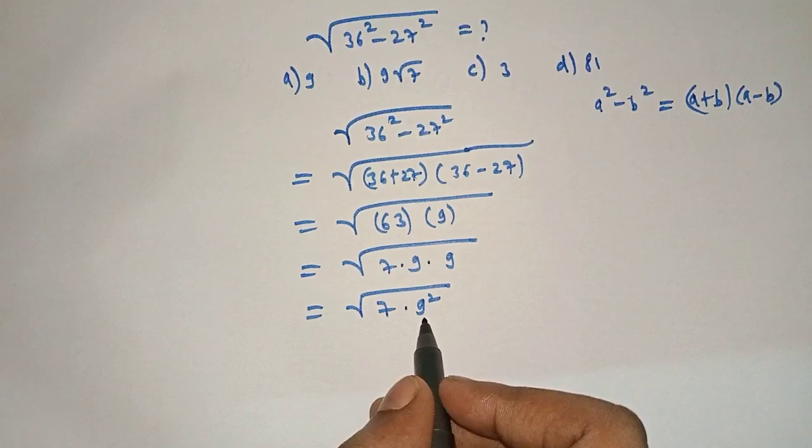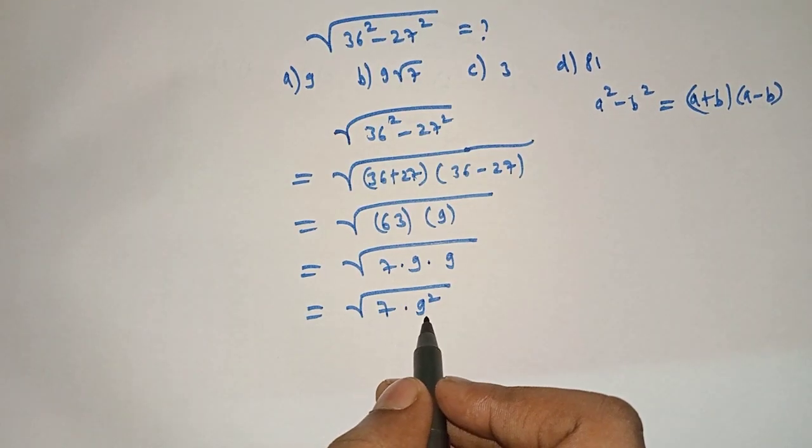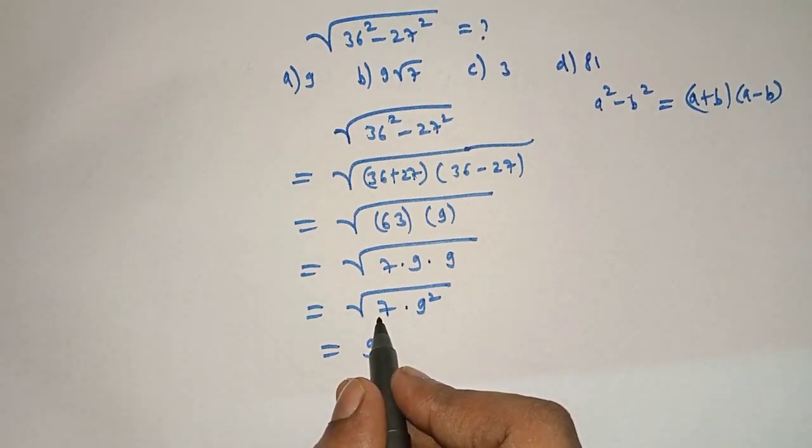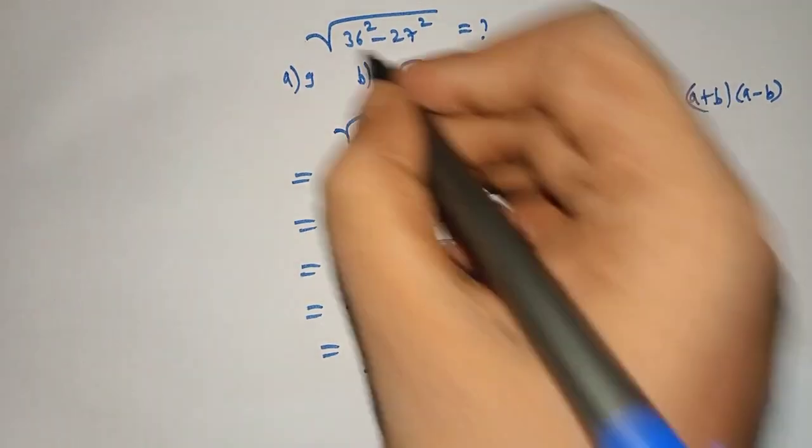So here we will take 9 square out of the square root. So what it will be? It will be 9, and what will remain under the square root? 7. So 9 square root 7 is our right answer, option b is our right answer.